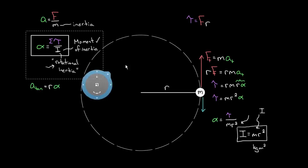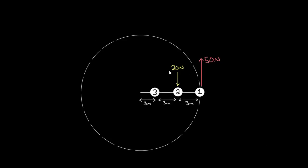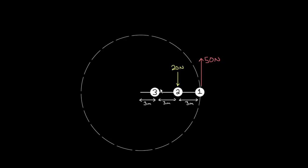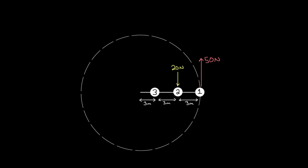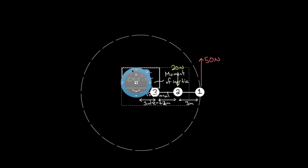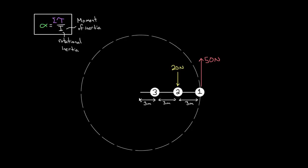What if your object isn't as simple as a single mass? Let's look at a more complex example. Say you had three masses, with one force of 20 Newtons downward on mass two, and one force of 50 Newtons upward on mass one. They're all separated by three meters and can rotate in a circle. The question is: what's the angular acceleration for these masses with this setup of forces?